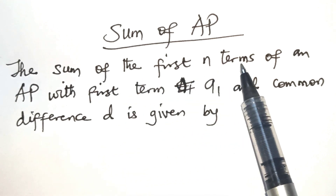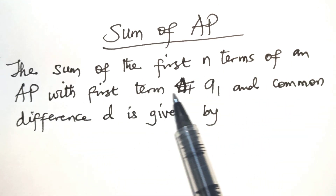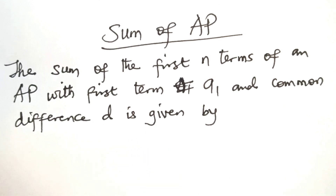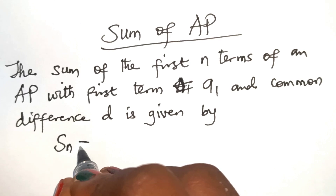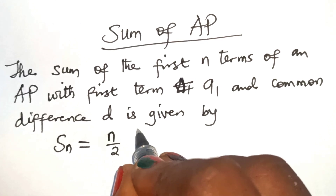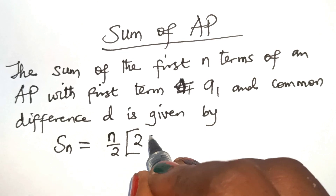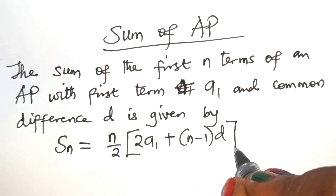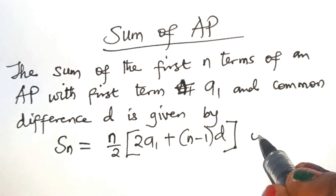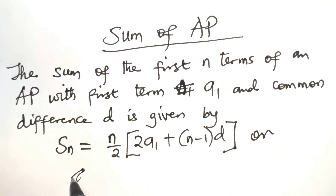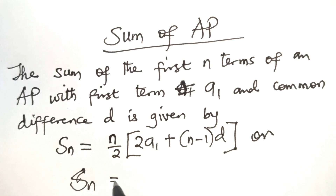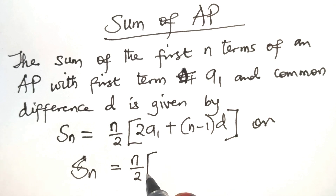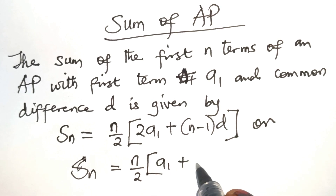The sum of the first n terms of an AP with first term A1 and common difference D is given by Sn equal to n over 2 into 2A1 plus n minus 1 multiplied by D. Or we can write it as Sn equal to n over 2 into A1 plus An.